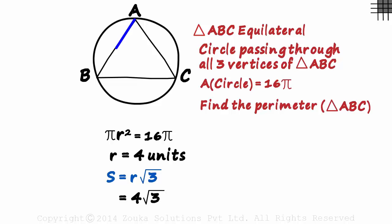As the triangle is equilateral, the perimeter will be thrice the side, which is 12 root 3 units.